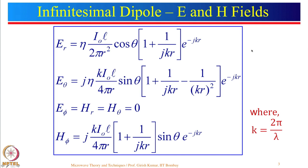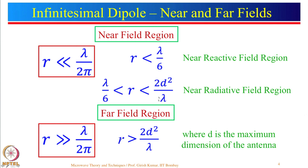Antennas are mostly defined in terms of near field and far field. If k*r is very large — meaning we are going further away from the antenna — the terms with higher powers of 1/r become 0, and we are left with only the far-field term for E-theta and H-phi. So we define near field and far field regions based on the value of k*r.